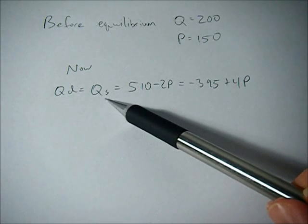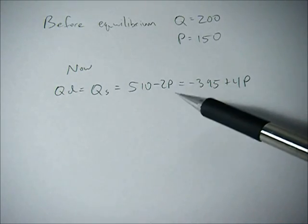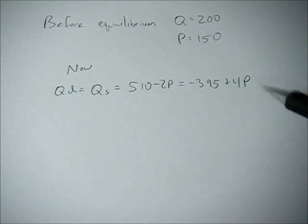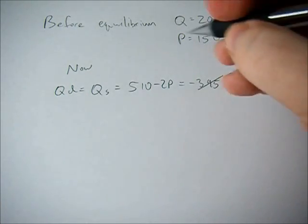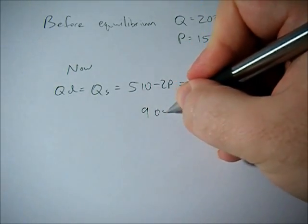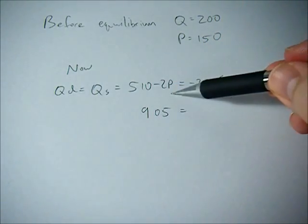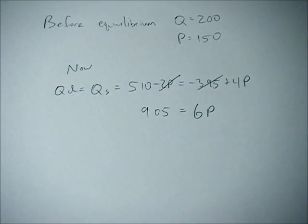510 minus 2P equals negative 395 plus 4P. First we can add 395 to both sides to get rid of it on this side, which ends up giving us 905 on this side. Add 2P to both sides, so that ends up giving us 6P.